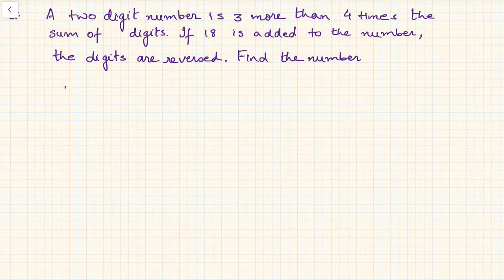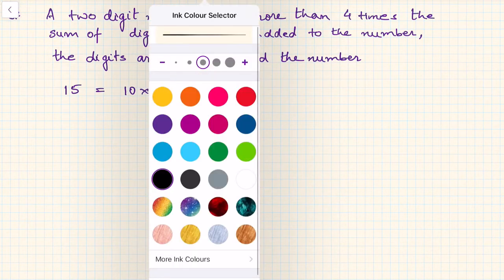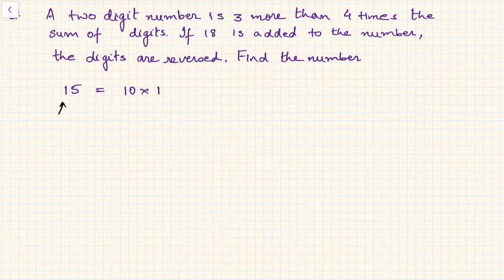Let us say we have a number 15, so 15 is equal to 10 times the tens place digit, that is 1, plus the units place digit, which is 5. If you see, the tens place digit here is 1 and units place is 5. This is tens place.